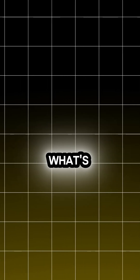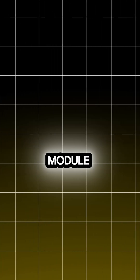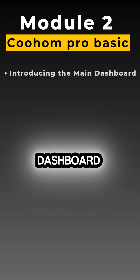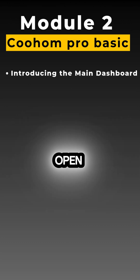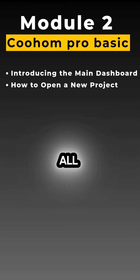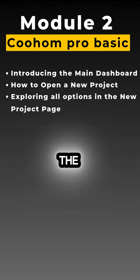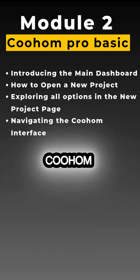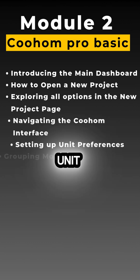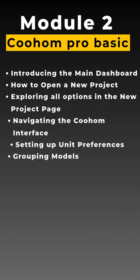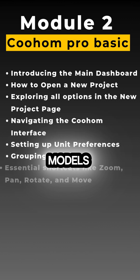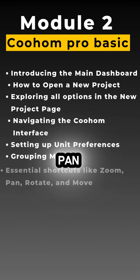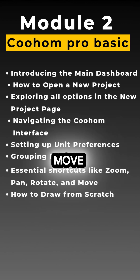Here's a quick look at what's coming next in module two: introducing the main dashboard, how to open a new project, exploring all options in the new project page, navigating the Kuham interface, setting up unit preferences, grouping models, and essential shortcuts like zoom, pan, and rotate.